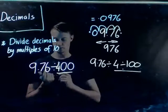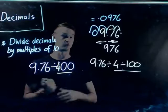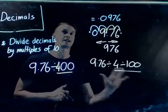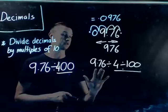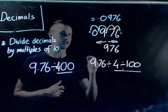All you need to do when you get a question like this, where it's 9.76 divided by 400, all you do is break it down into two parts. So, I can effectively do 9.76 divided by 4, which we'll do now.